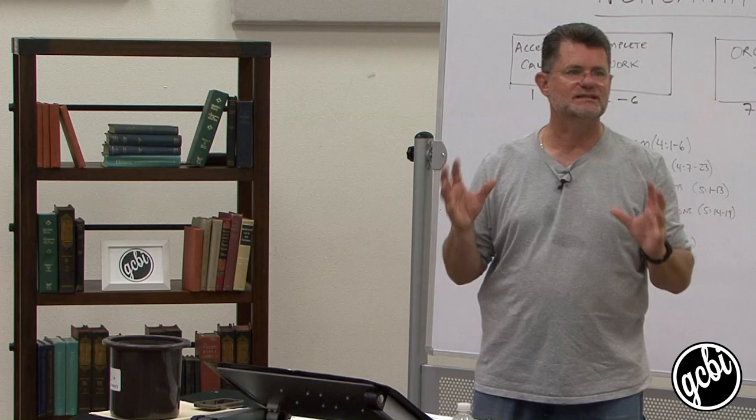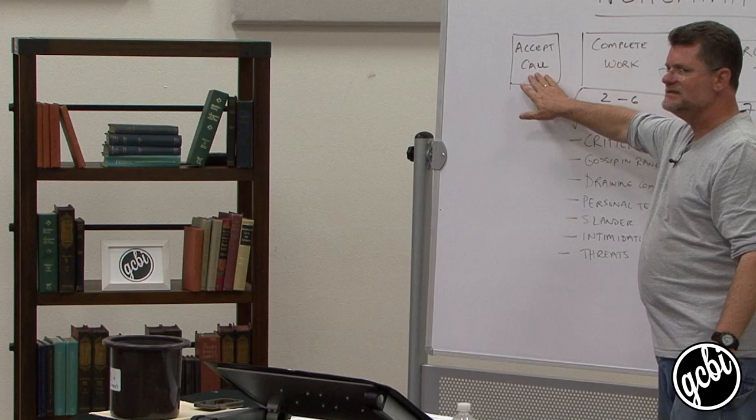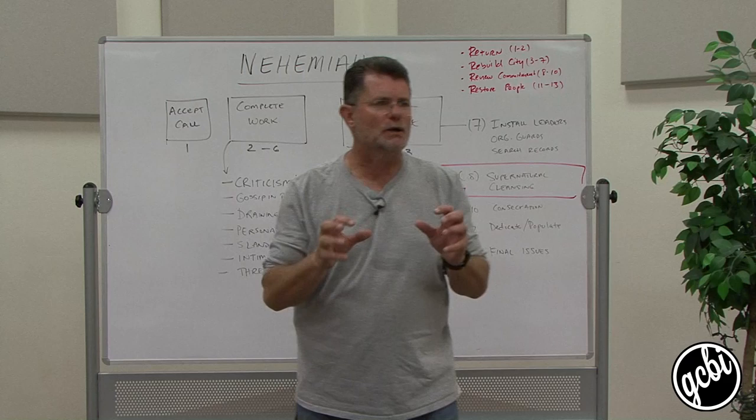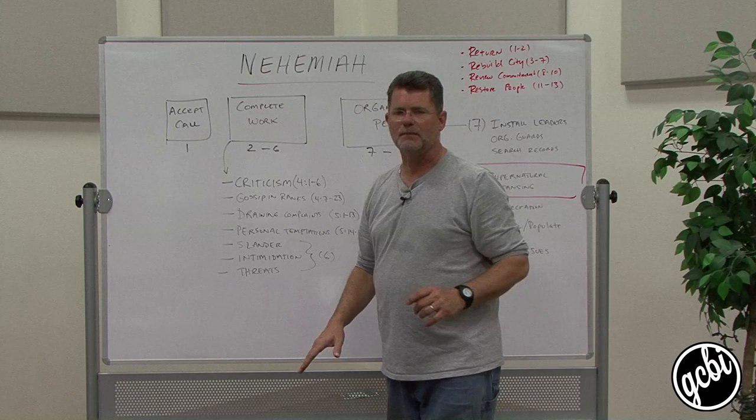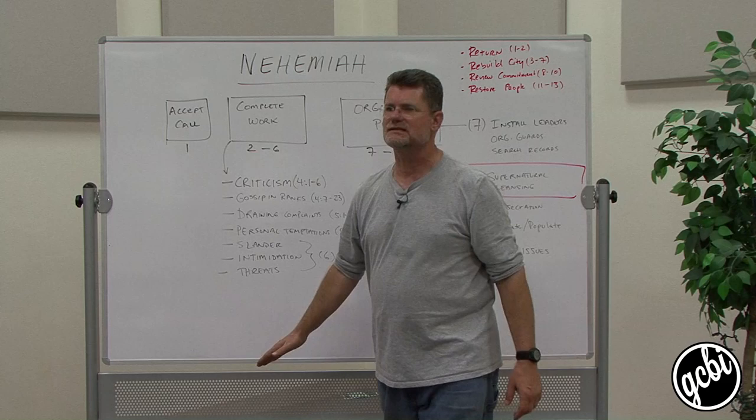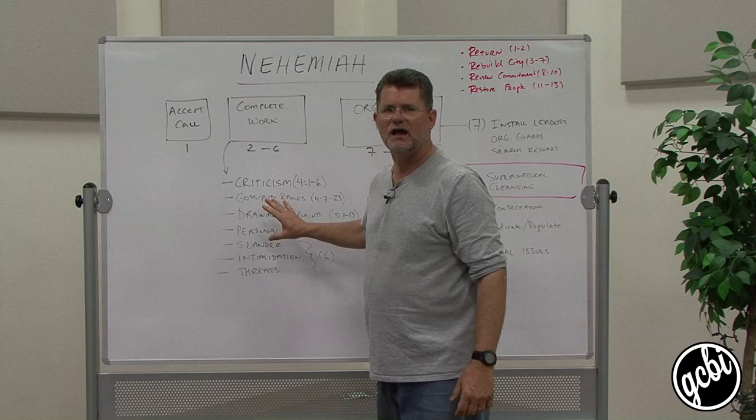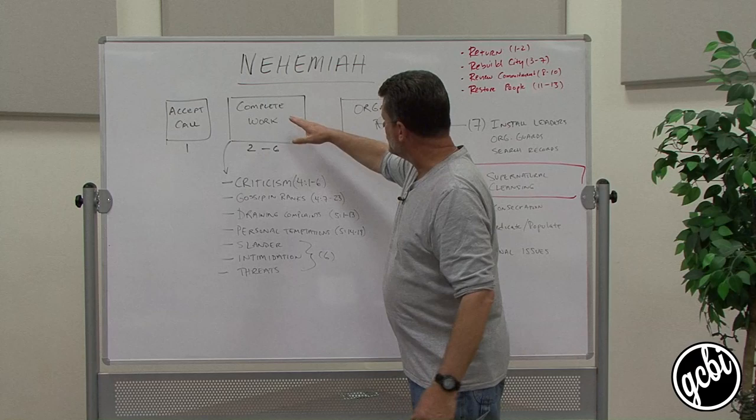The first chapter, of course, is the call of Nehemiah as he gets it and as he accepts it. Chapters 2 through 6, I think, are the heartbeat of the leadership lessons of the book, and you're going to see that there are seven things that happen, two in chapter 4, two in chapter 5, three in chapter 6, that are tests against his leadership. All of that will show up in the completion of the work if the work is understood to be the walls.